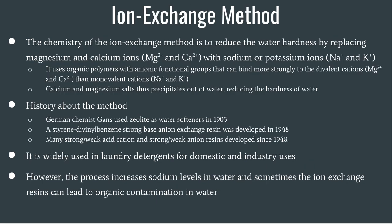The third and final method is the ion exchange method. The chemistry of the ion exchange method reduces water hardness by replacing magnesium and calcium ions with sodium or potassium ions. It uses organic polymers with anionic functional groups that can bind more strongly to divalent cations than monovalent cations. Calcium and magnesium salts thus precipitate out of water, reducing the hardness of water.